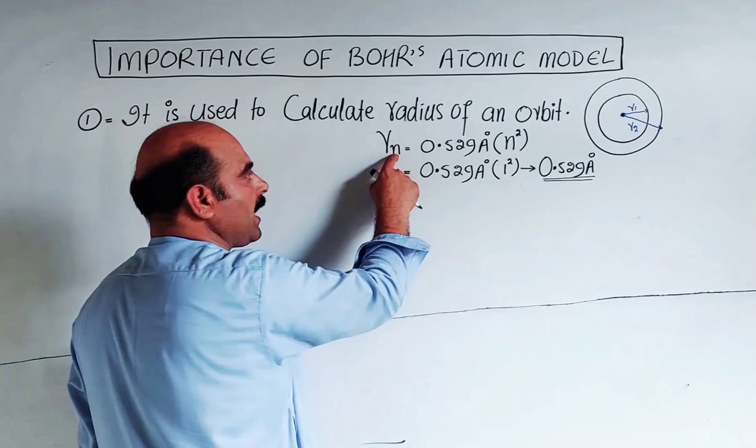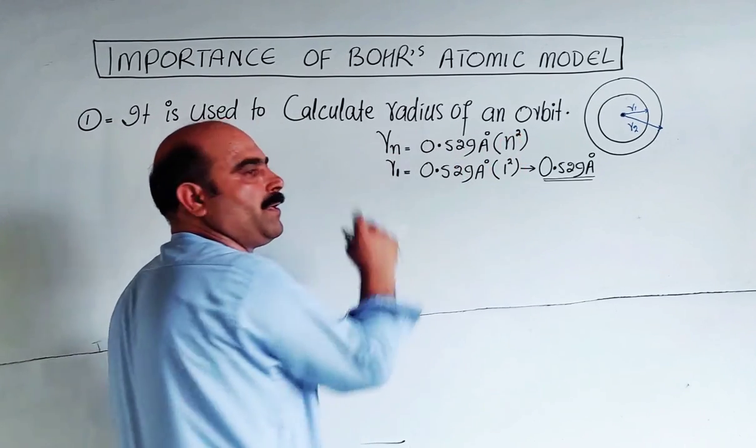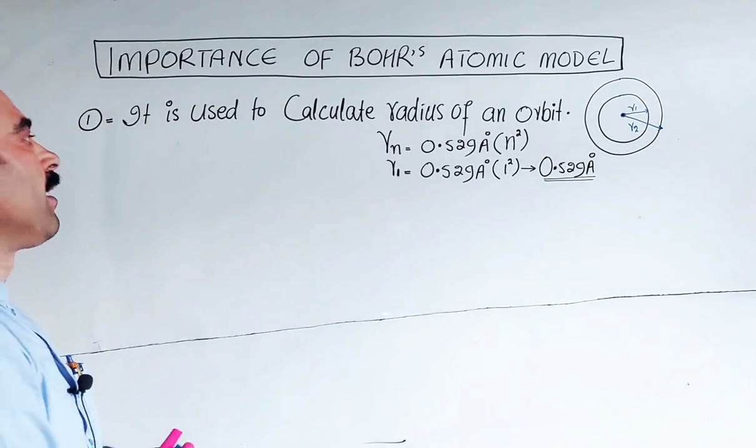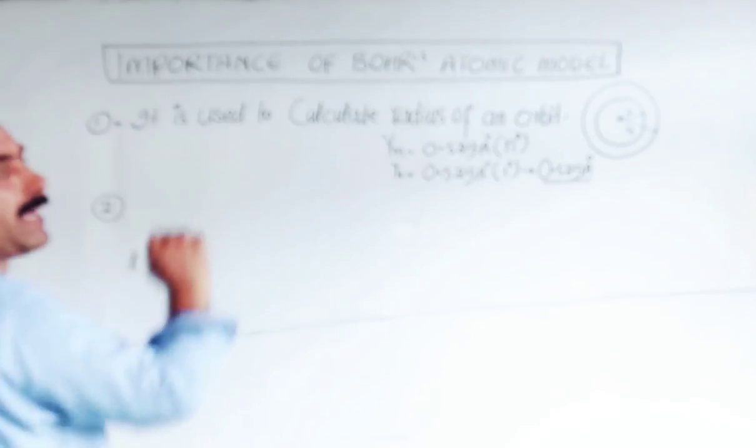For the second orbit, n equals 2. We put 2 in the formula: 2 squared equals 4, so 4 times 0.529 gives the second orbit radius. This is just the theory.